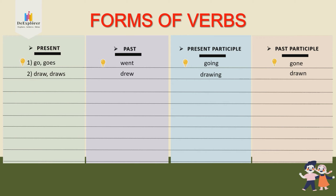I want you to do the rest of the verbs. Number three is 'come'. Number four: take. Past tense: took. Then the -ing form and the past participle. Number five: write, writes. Past tense: wrote. Number six: sweep, sweeps. Find the past tense for sweep on your own.